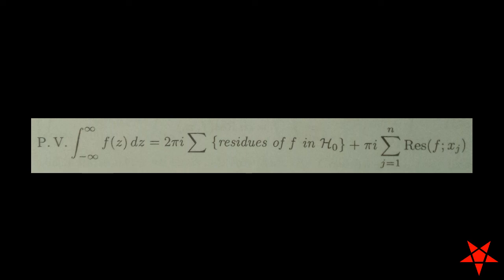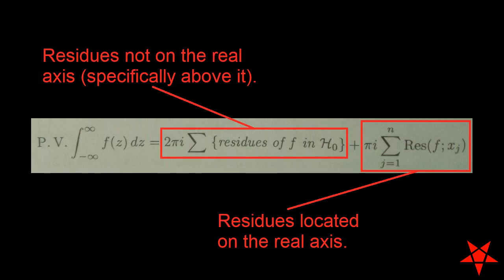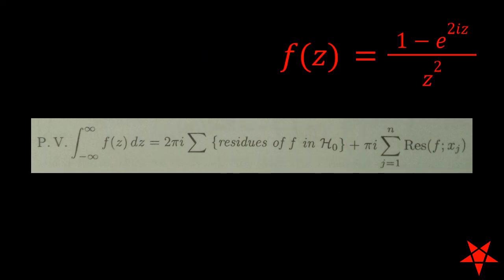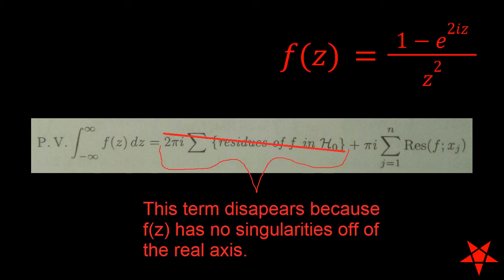Let us recap what the two terms on the right are for. The first applies to singularities in the upper half of the complex plane that do not fall on the real axes, and the second term only applies to residues on the real axes itself. Now, the formula f of z has just one lonely singularity at c equals nothing located on the real axes, which of course includes the origin. Thus, the first term disappears because there are no singularities or residues anywhere except for the one at the origin.